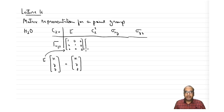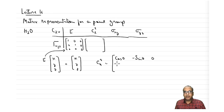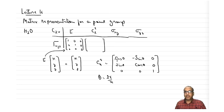For C2(z), we use the rotation matrix formula: cos θ, −sin θ, 0 / sin θ, cos θ, 0 / 0, 0, 1. For C_n(z), θ = 2π/n. In the case of C2, n = 2, so θ = π. This is straightforward because our rotation axis lies along one of the coordinate axes.